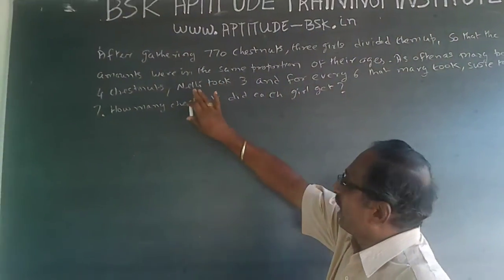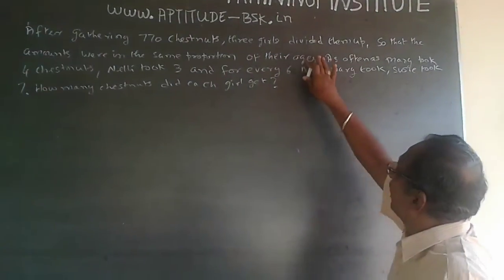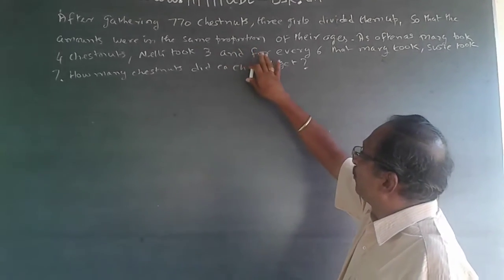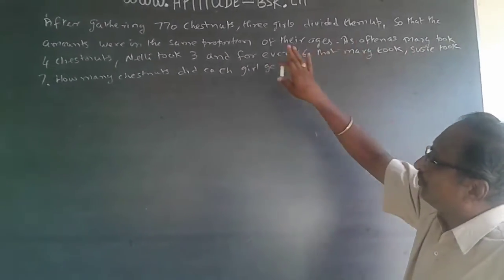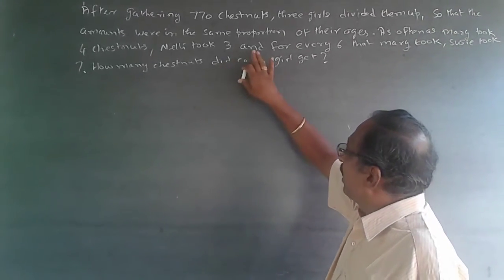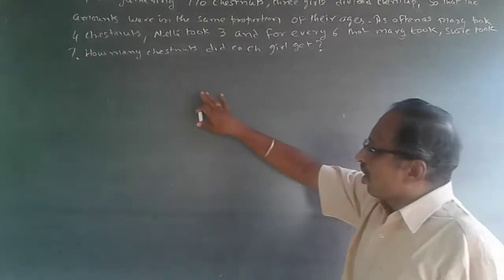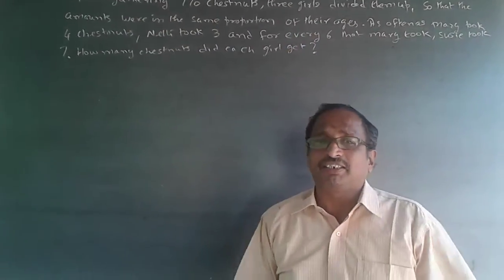The question is, after gathering 770 chestnuts, 3 girls divided them up so that the amounts were in the same proportion as their ages. As often as Mary took 4 chestnuts, Nelly took 3, and for every 6 that Mary took, Susie took 7. How many chestnuts did each girl get?